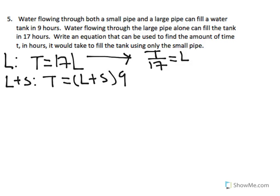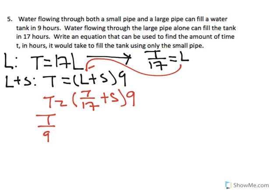Now we can use this L using substitution. So we have t equal to, instead of L, we write t over 17 plus the small pipe times nine. And so divide by nine to both sides. So t over nine equals t over 17 plus s.